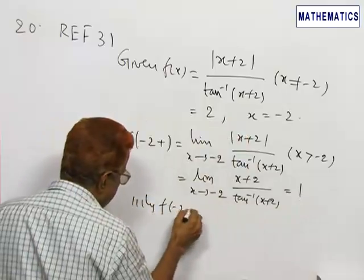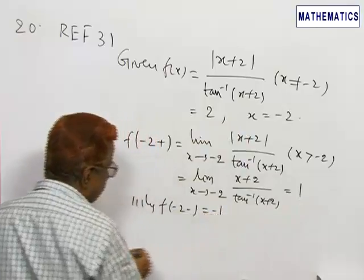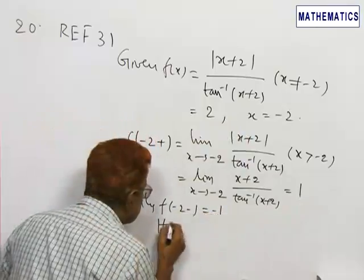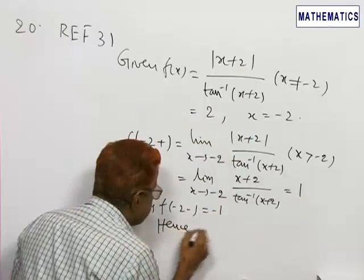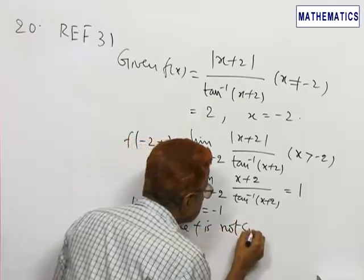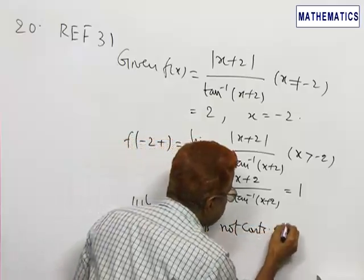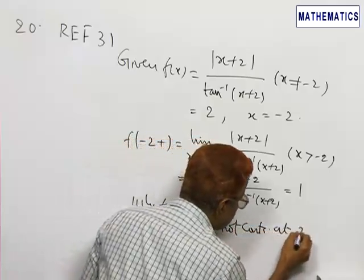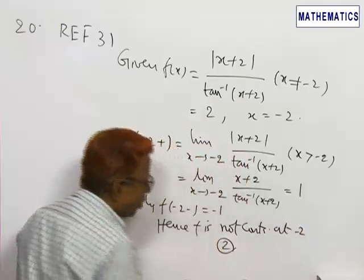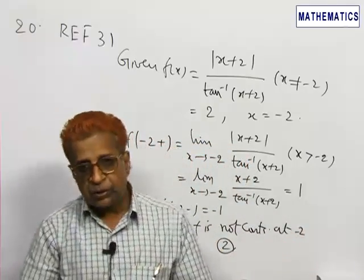Similarly, f(-2⁻) is minus one, which is the left-hand limit. Hence f is not continuous at minus two. Therefore, option two is the right answer.